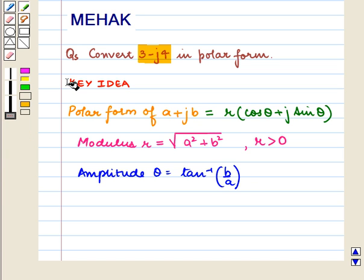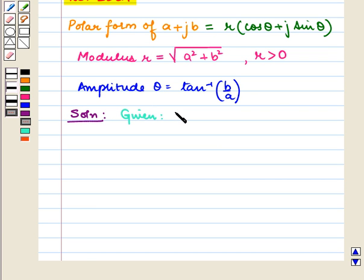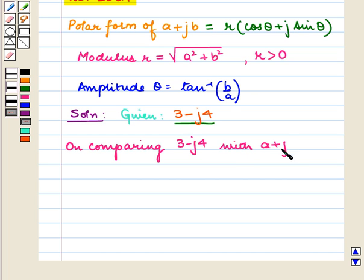With this key idea, let us proceed with the solution. We are given 3 minus j4 in the a plus jb form. We have to convert this into the polar form that is in r into cos theta plus j sin theta form. On comparing 3 minus j4 with a plus jb, we get a is equal to 3 and b is equal to minus 4.